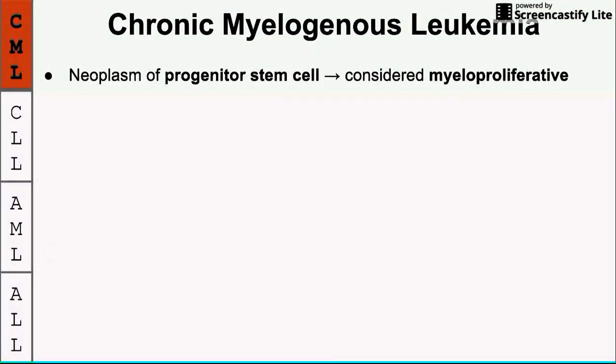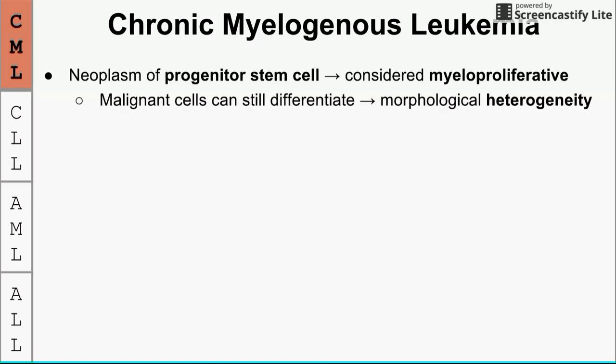Chronic myelogenous leukemia is a neoplasm of a progenitor stem cell — the very top of the stem cell development chain. It is considered a myeloproliferative disease, in the same category as polycythemia vera and essential thrombocythemia. One big difference with CML is that the malignant cells can still differentiate, leading to morphological heterogeneity. On a blood smear we'll see different kinds of mature cells, and increased numbers of many different cell types.